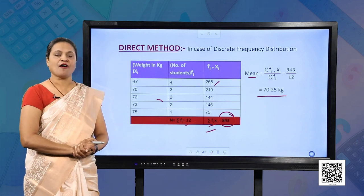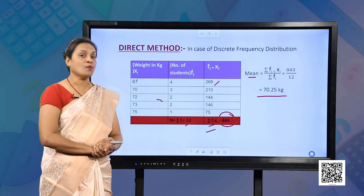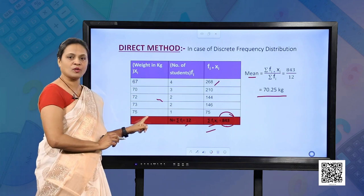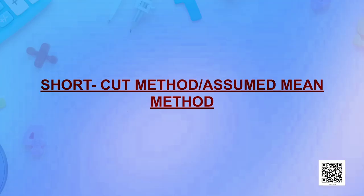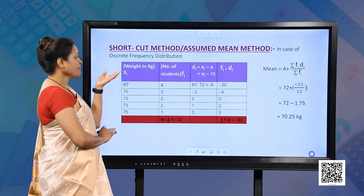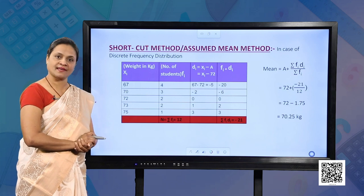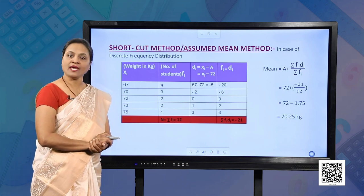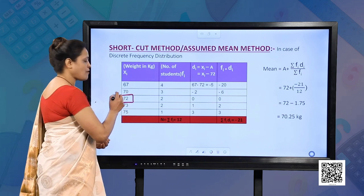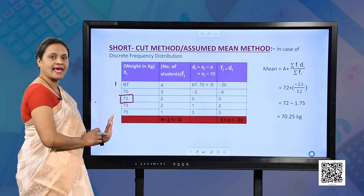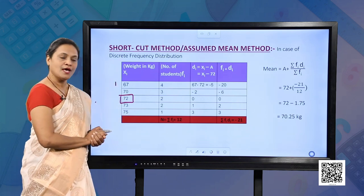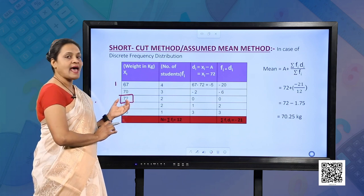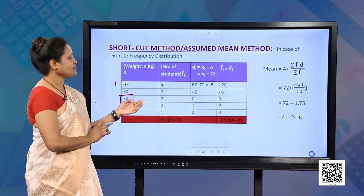There is one more method we can use for this type of tabular representation — the assumed mean method. Let us calculate the mean of the same data using this method. Here we are going to simplify the Xi values further by subtracting a common number from all the Xi's. That common number is the middle value of all the Xi's. Since there are five Xi's, the middle one is 72. So I will take 72 as the assumed mean A and subtract it from all the Xi's.